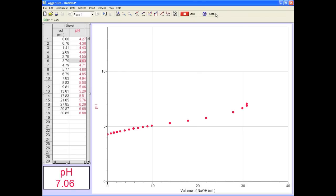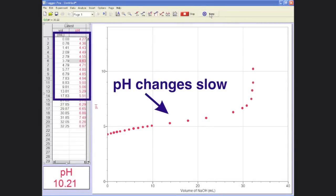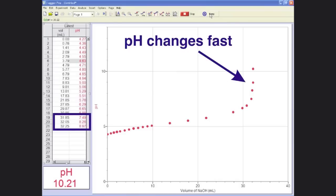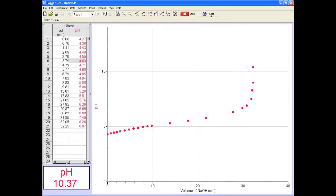Keep entering data and keep an eye on the curve. At some point it'll start going nuts and you'll have to slow way down when adding titrant. Try single drops or even half drops. Getting the steep points shows pro technique and gets you sweet results.